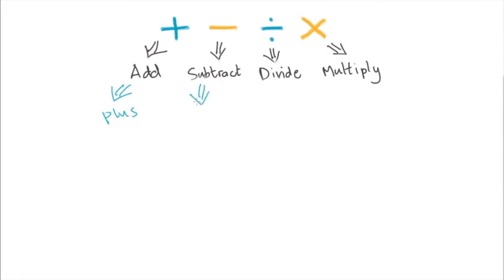for this one, minus, for this one we use divided by, and for this one, times by.